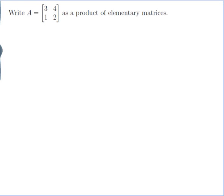Write A, which is equal to [[3,4],[1,2]], as a product of elementary matrices. Let's understand the question first. What is an elementary matrix? An elementary matrix is a matrix that's designed to do an elementary row operation.